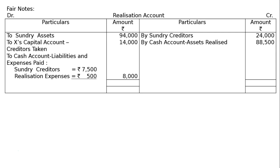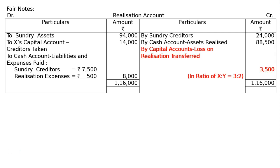Totaling the debit side gives rupees 1,16,000. Taking it to the credit side and finding the gap: by capital accounts — loss on realization transferred in the ratio of X to Y, that is 3 to 2. The loss is rupees 3,500. X's share equals rupees 3,500 multiplied by 3/5 equals rupees 2,100. Y's share equals rupees 3,500 multiplied by 2/5 equals rupees 1,400.